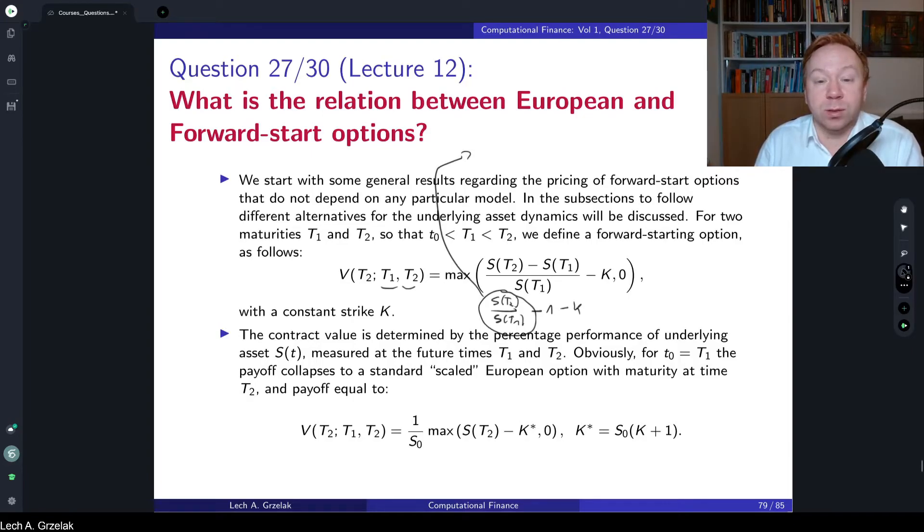And what is interesting here is that this quantity, if we look at the case of a Black-Scholes model, for example, or actually in any equity model, S(T2) divided by S(T1) is equal to S(T0) times exponent with an integral, and the same would hold for the other term. This integral will be from time T0 to time T2, and this one will be from time T0 up to time T1. But what we see here is that the initial value will cancel out. So this quantity does not depend on today's value of a stock. This is exactly the whole essence of performance options - it does not depend on today's level of stock, but it will depend on the performance of stock in the future.